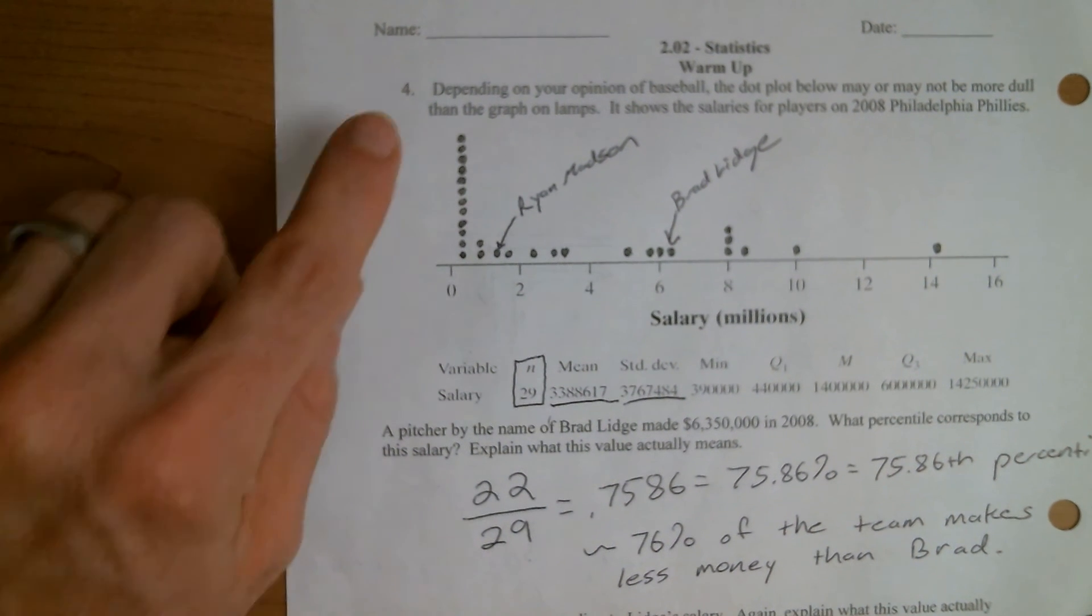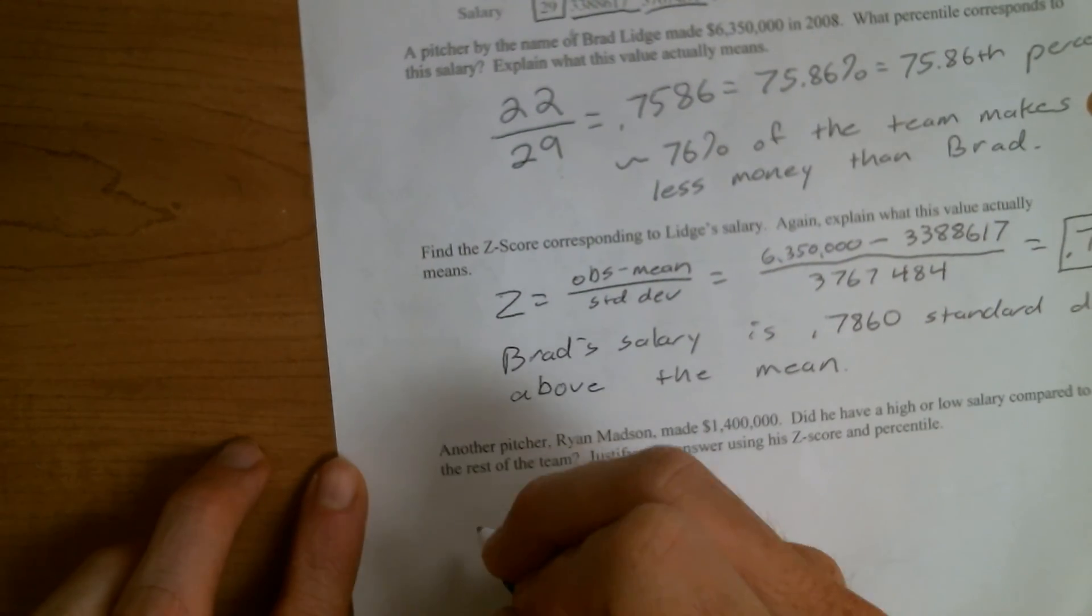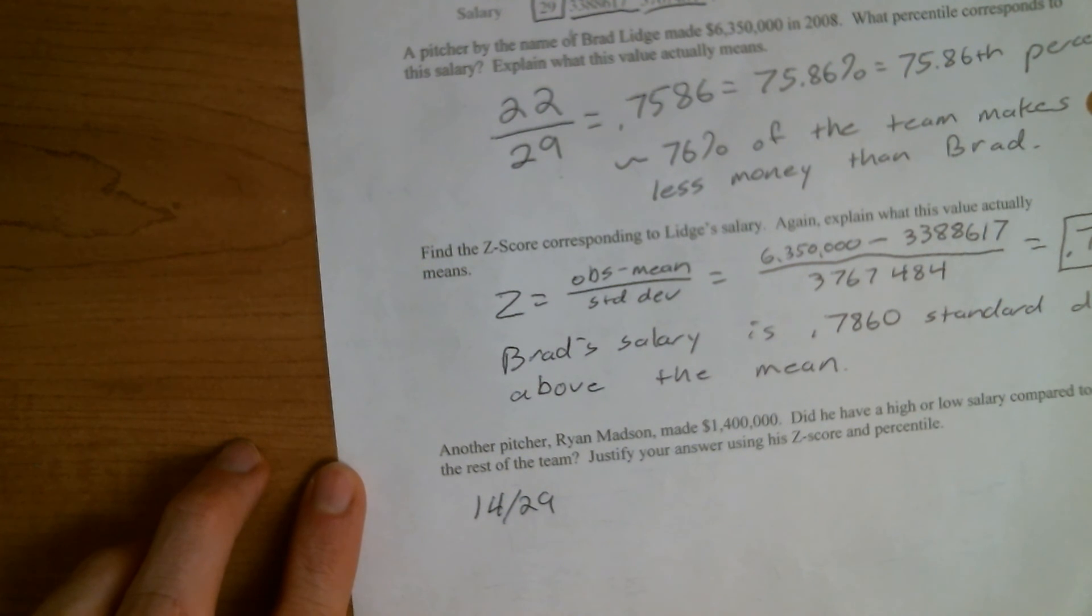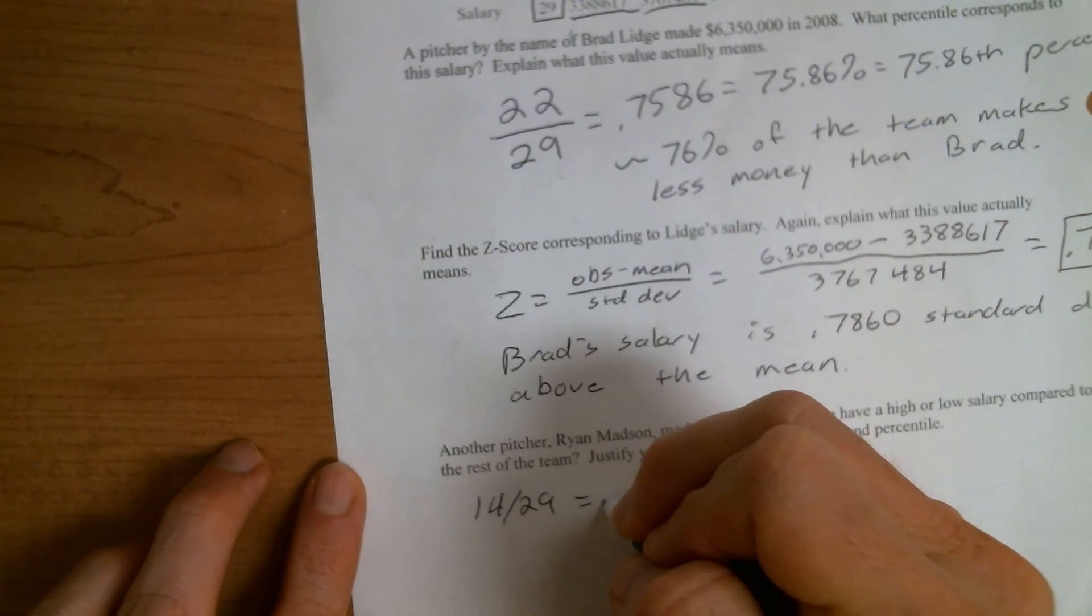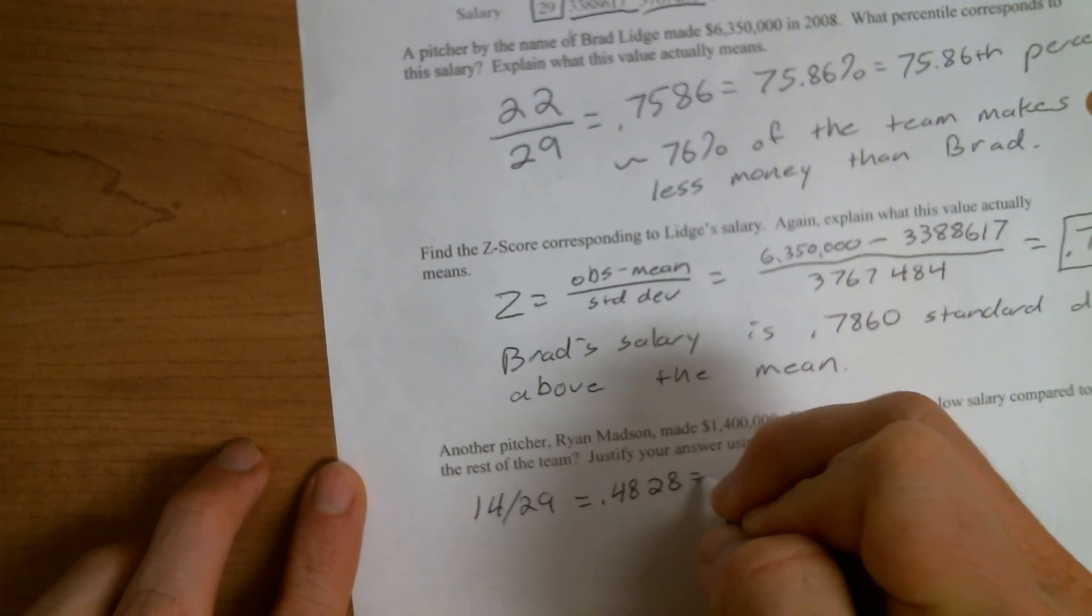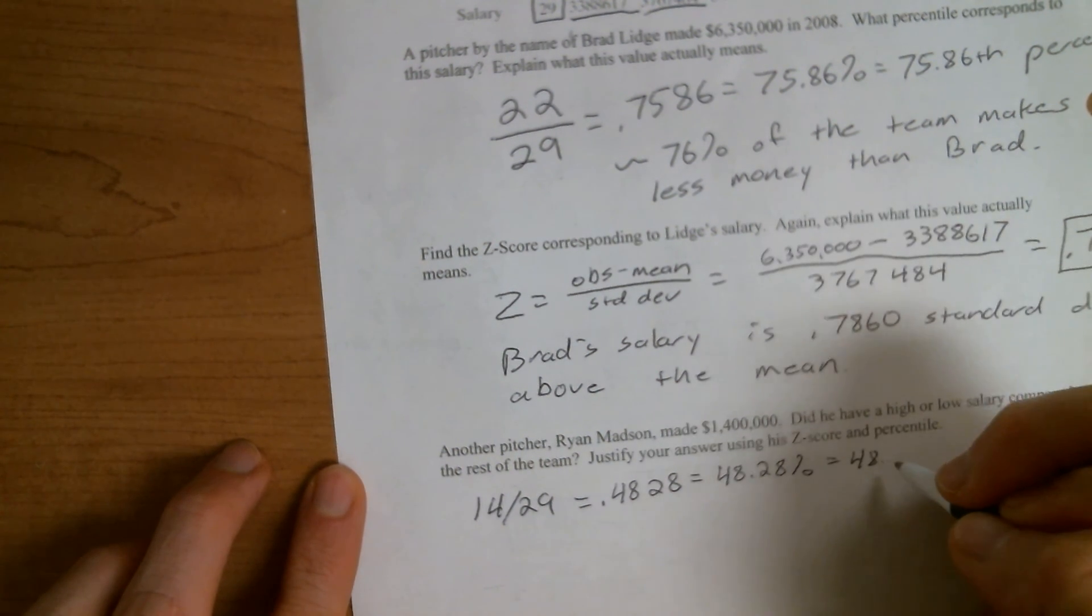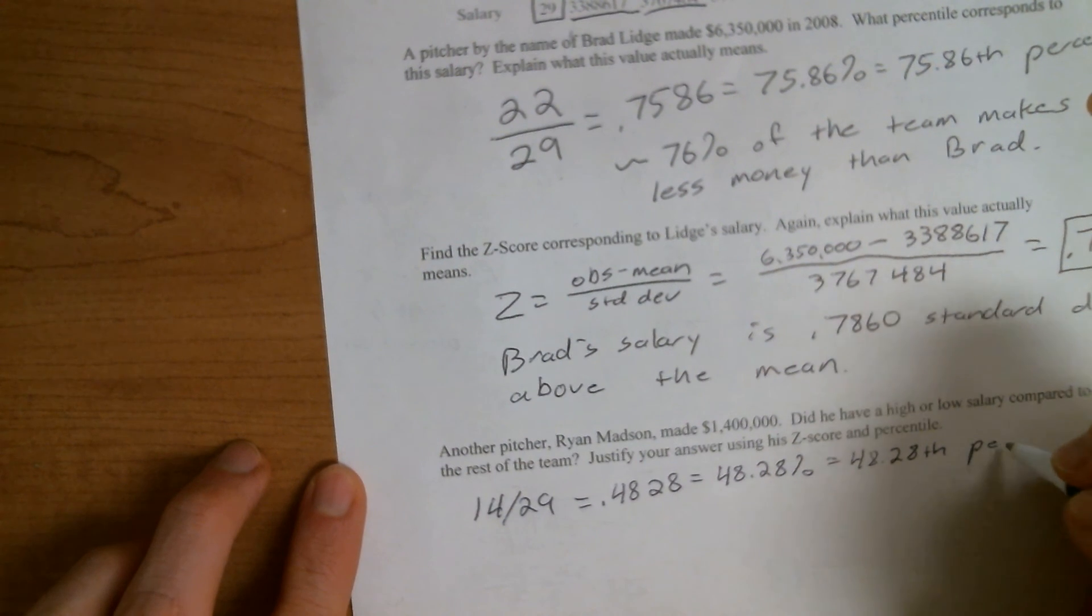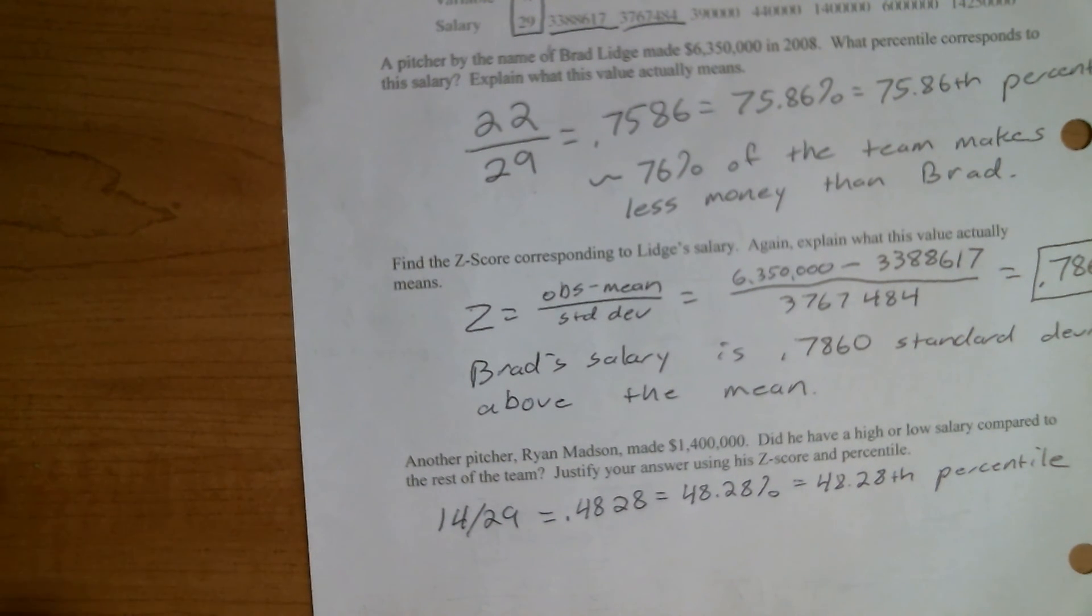So that's our 1.4 million. So again, there's 12 dots in this line. There's two more there. So the percentile would just be 14 out of 29, which is 0.4828. Or you can write that as 48.28%, or you can write it as the 48.28 percentile. So that's saying, you know, basically roughly 50% of the team is below Ryan there. So that makes you think that Ryan's pretty much right in the middle of the team.